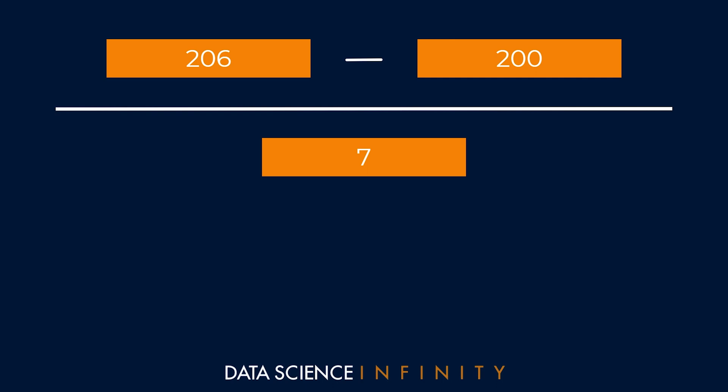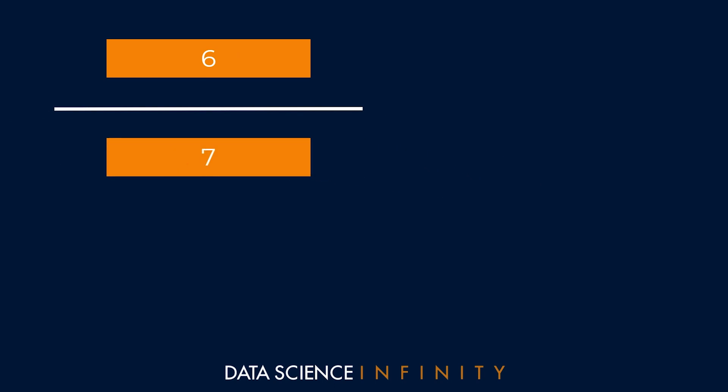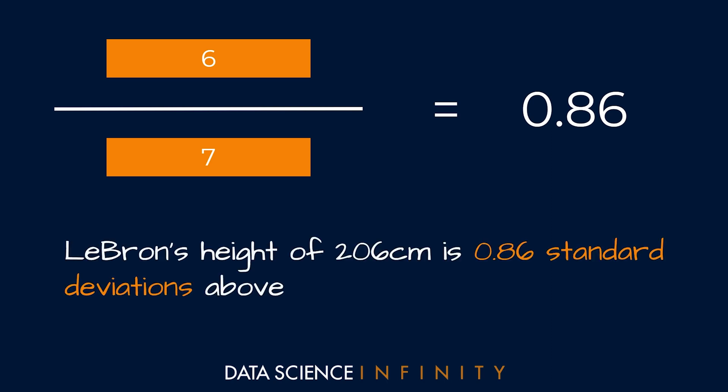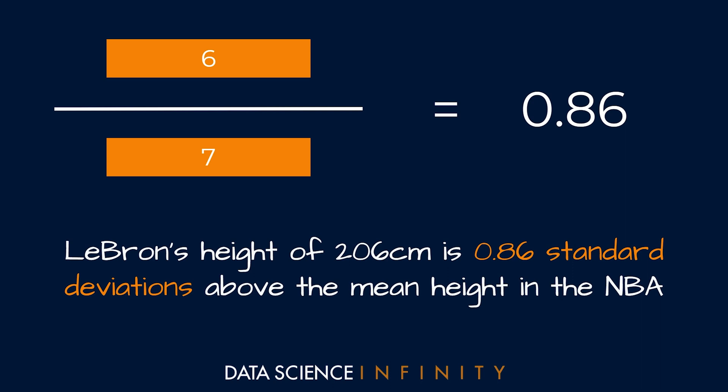206 minus 200 on the top simplifies down to 6 over 7. LeBron is 6 centimeters taller than the mean height and the standard deviation of our data is 7 centimeters, so we'd expect him to be just under one standard deviation above the mean — and that is absolutely true. 6 divided by 7 equals 0.86. LeBron's height of 206 centimeters is 0.86 standard deviations above the mean height in the NBA.